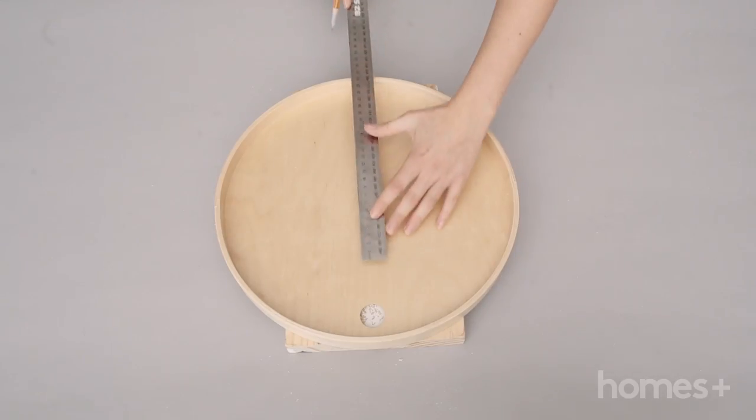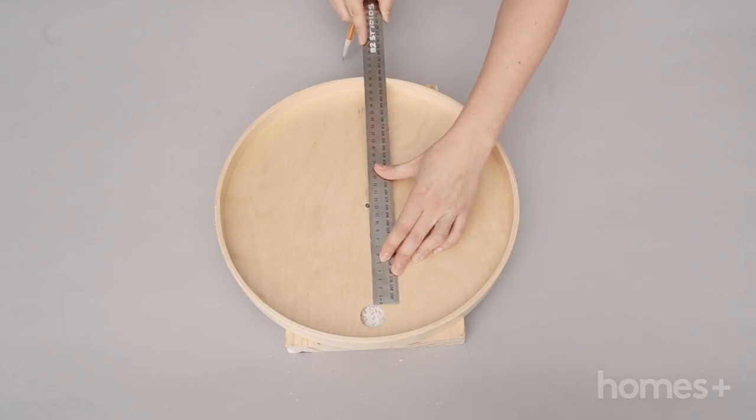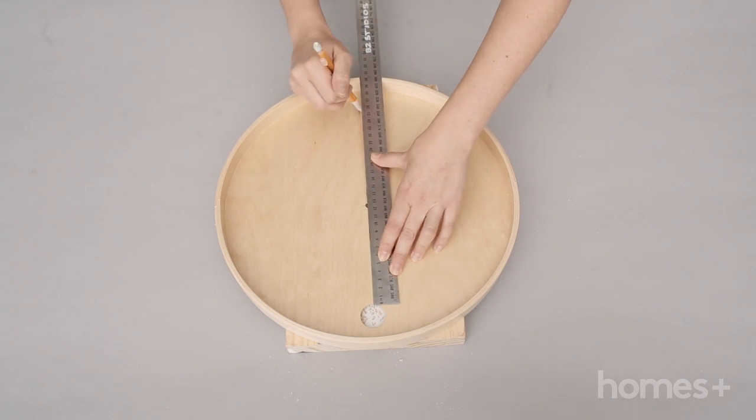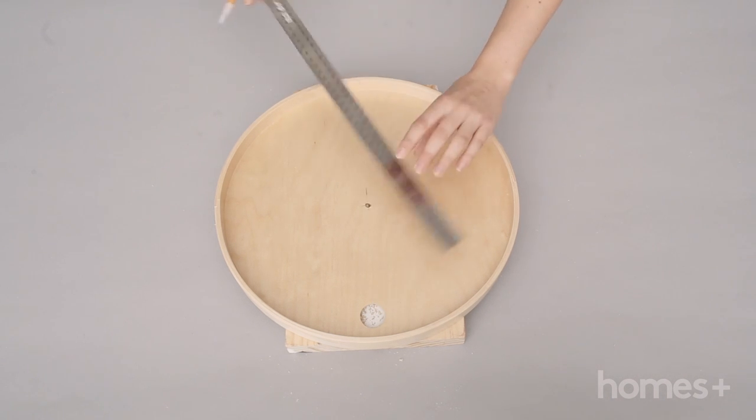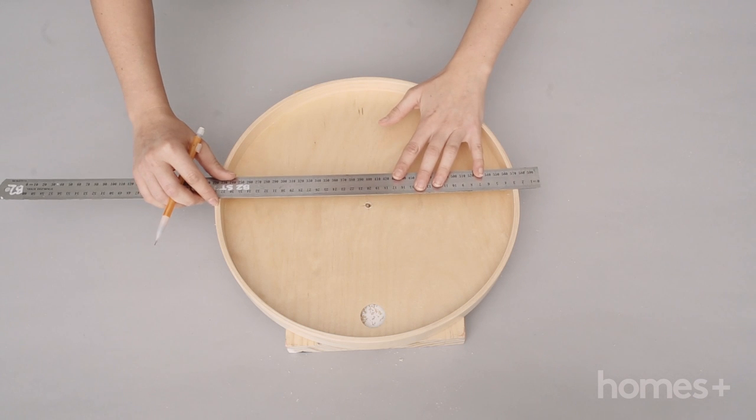Now assuming that the factory made hole in the tray is at 12 o'clock, use your center point to mark points at three o'clock, six o'clock and nine o'clock.